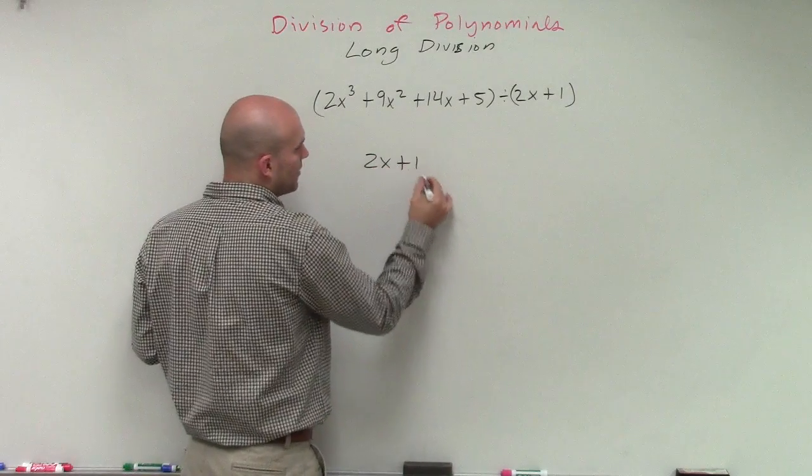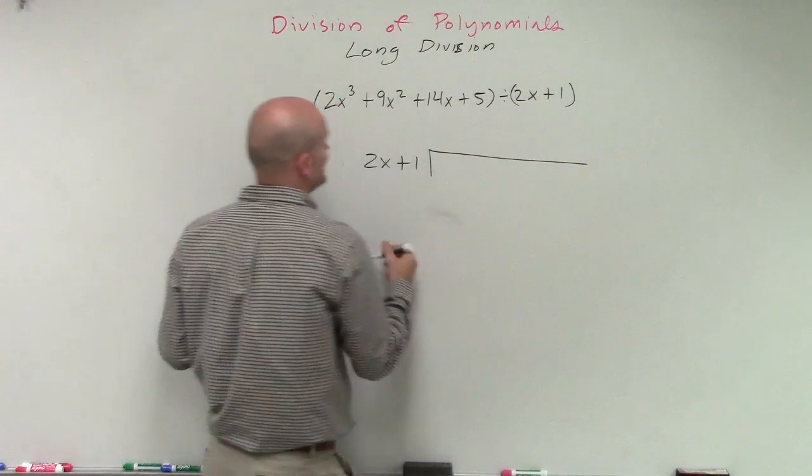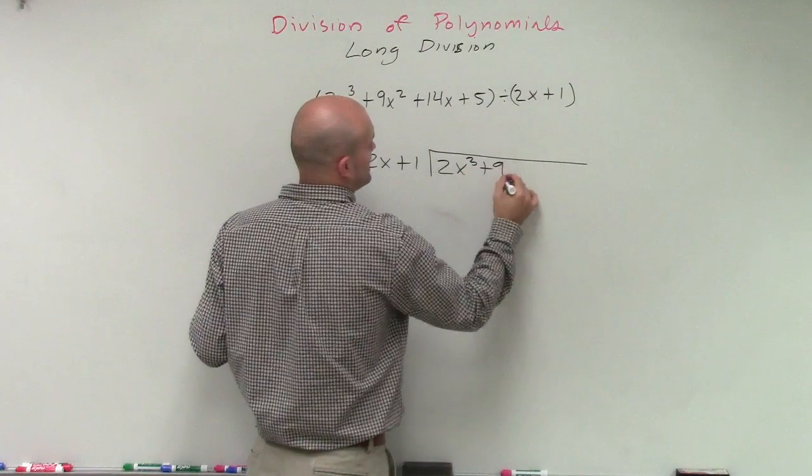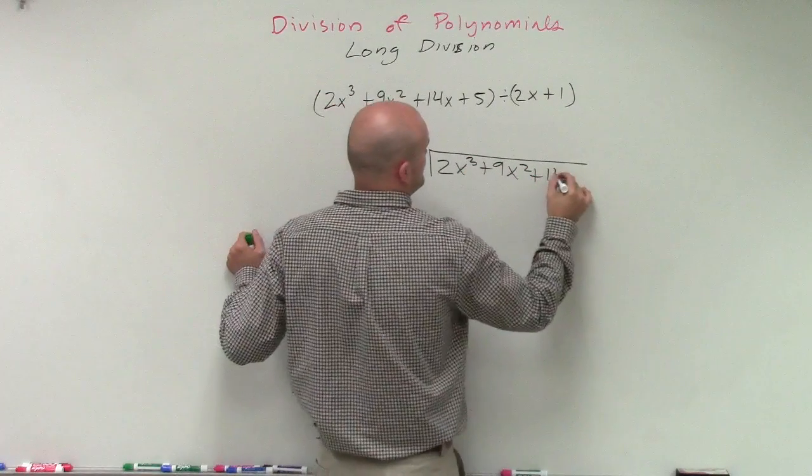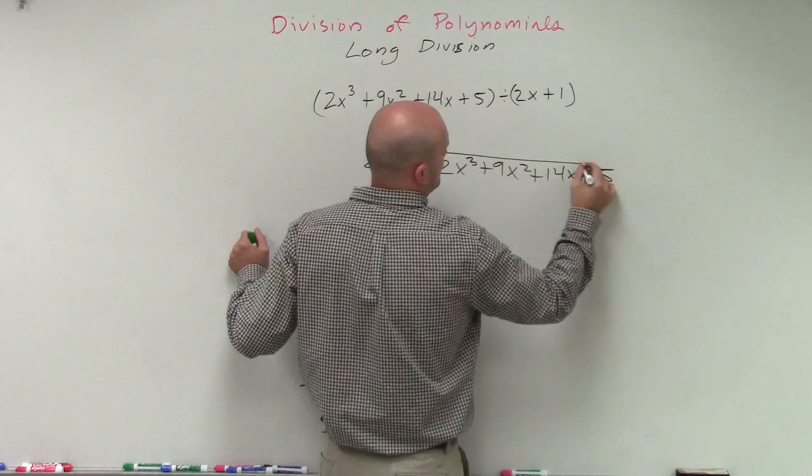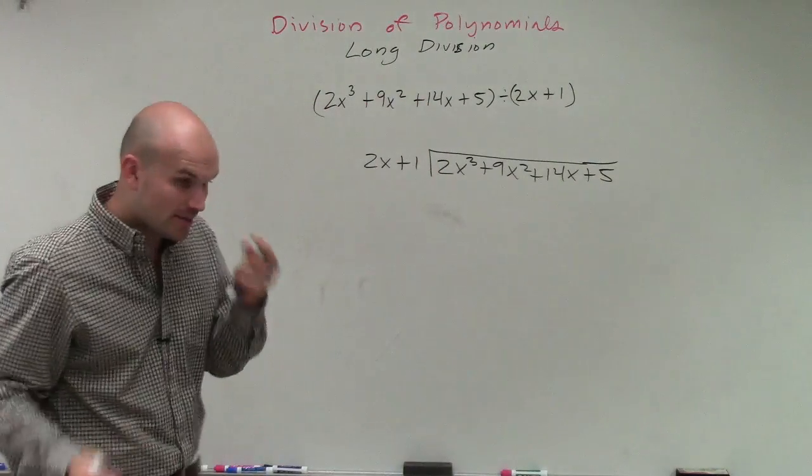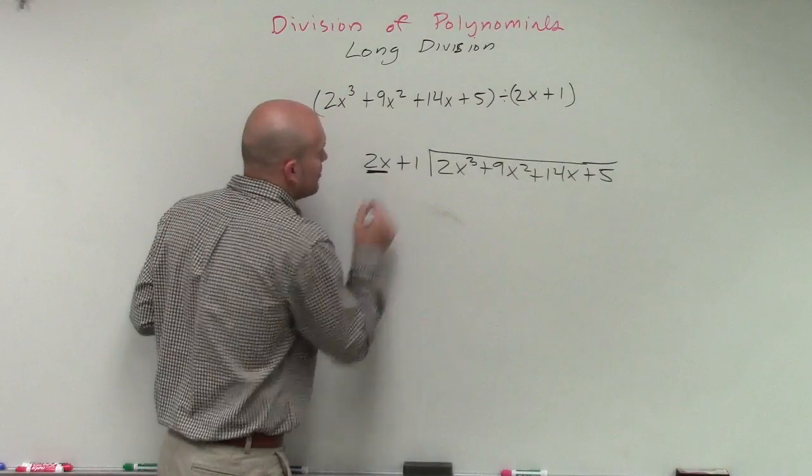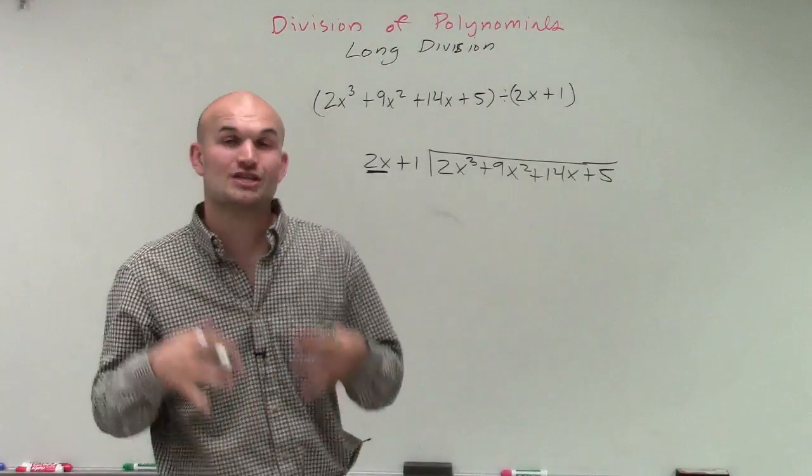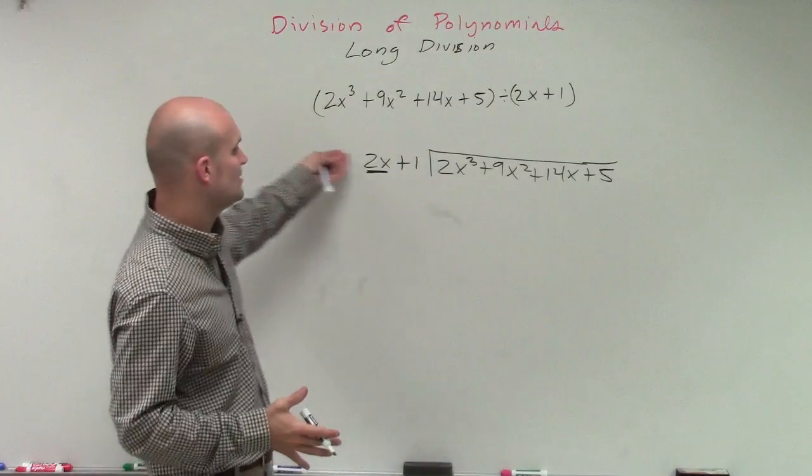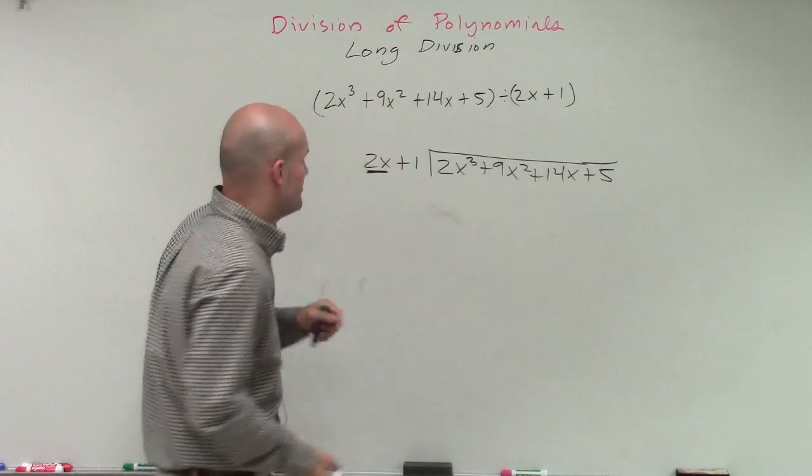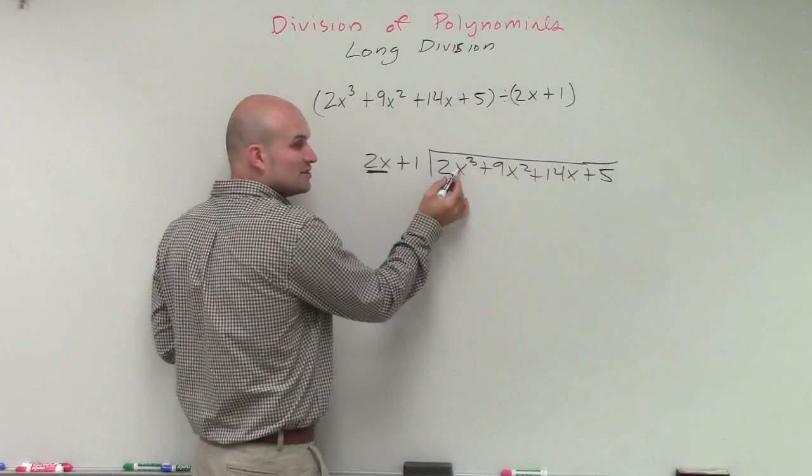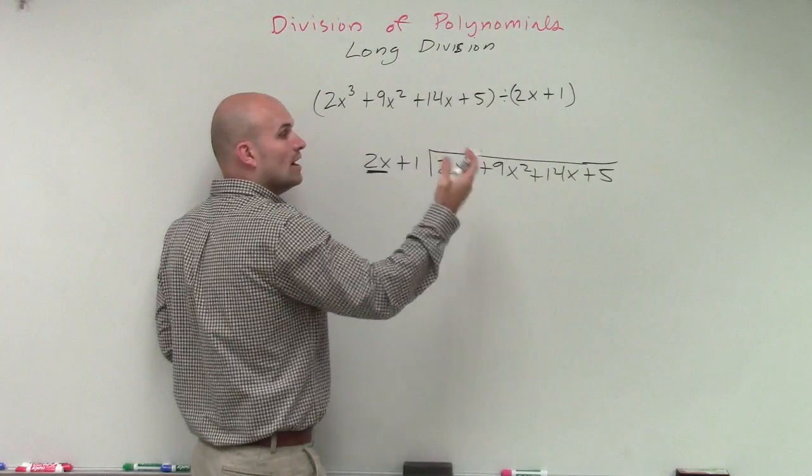So I have 2x plus 1 as my divisor, dividing into my dividend, which is 2x cubed plus 9x squared plus 14x plus 5. Okay, so when applying the division algorithm for long division, we're going to do the exact same thing. This is going to be our most important term of our divisor, as long as that's the leading term in descending order, which it is. Then I take my first term, divide it into the first term of my dividend. We're going to do this one at a time.